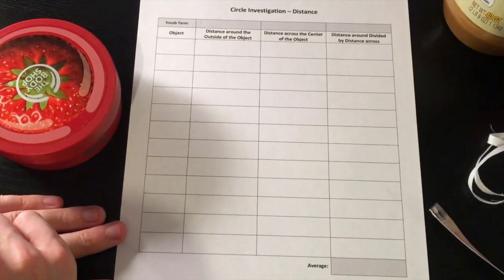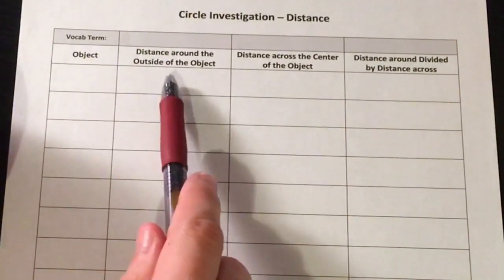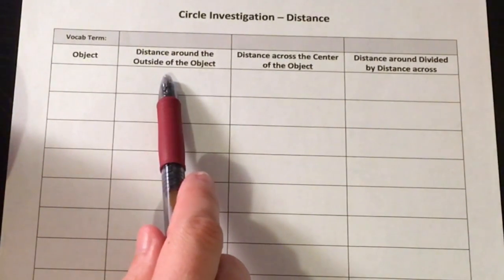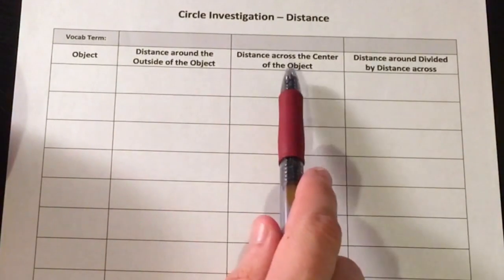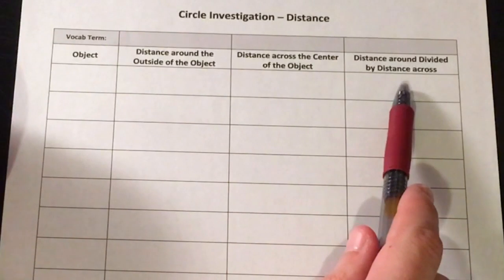On your paper, let's make a data table with four columns. Column 1, just label it object. Column 2, it's the distance around the outside of the object. Column 3, it's the distance across the center of the object. And column 4, it's the distance around divided by the distance across.